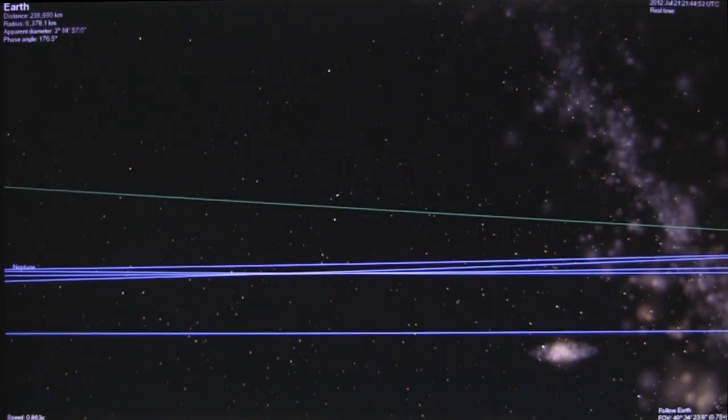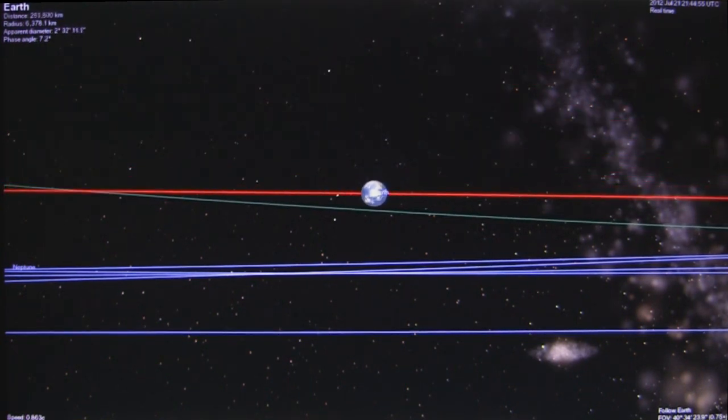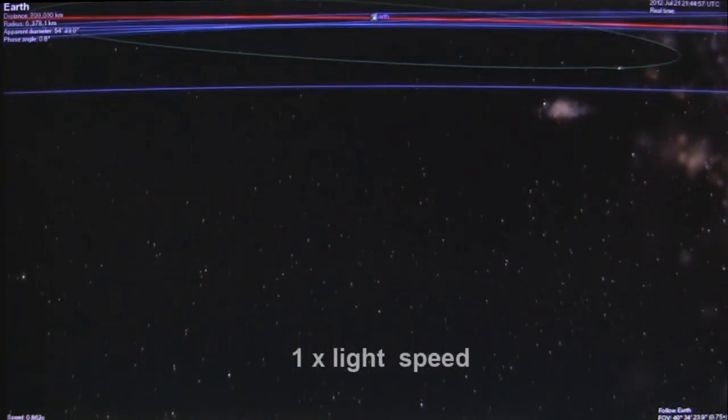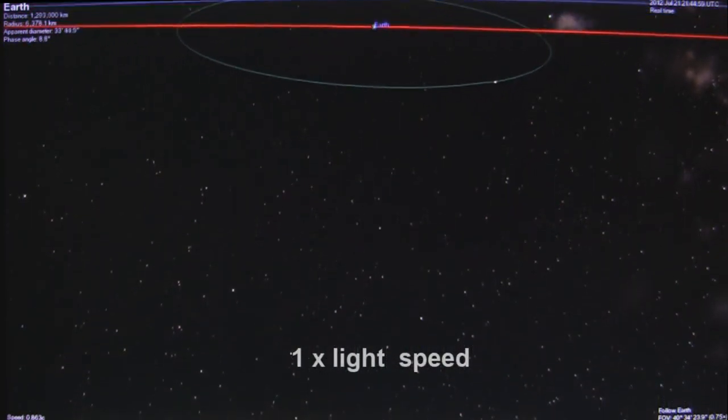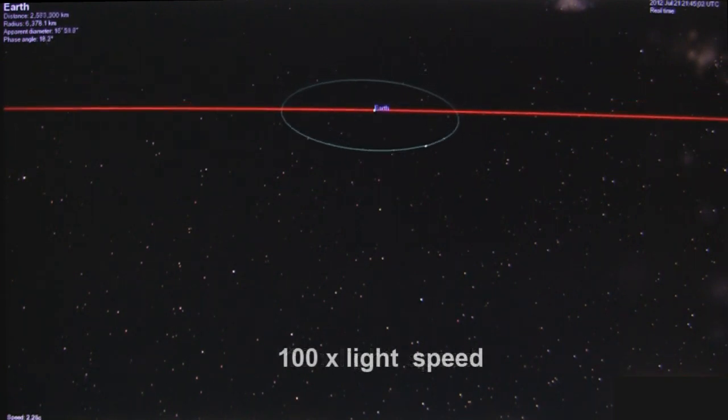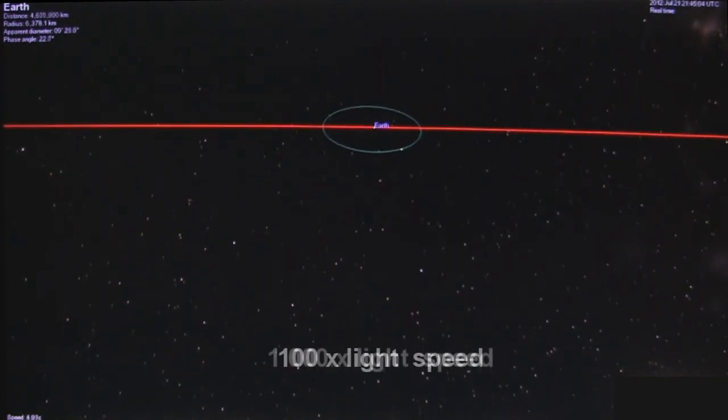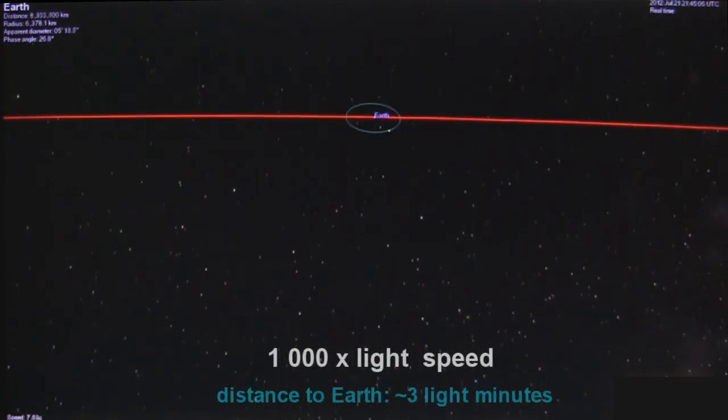Now let's put that into perspective. Let's put this journey into reverse. Let's start flying backwards at the speed of light. Now 10 times the speed of light. 100 times the speed of light. 1,000 times the speed of light.